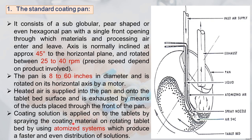The coating solution is applied by spraying the coating material onto the rotating tablet bed using an atomized system. The spray nozzle and atomizing air break the coating solution into droplets, producing faster and more even distribution of the coating solution.